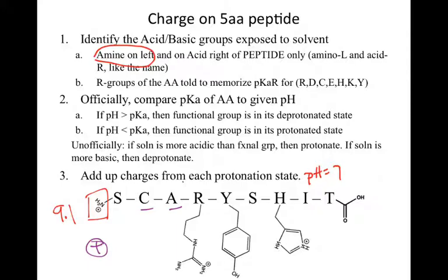We can then move to arginine — I included the structures, which would have been helpful if I'd included the pKas, but you can look those up. The other option is using the unofficial system. We're looking at roughly an amine group. If we've got an amine and we're in a solution that's more acidic than the functional group, then we're looking at the protonated state — this should be positive.